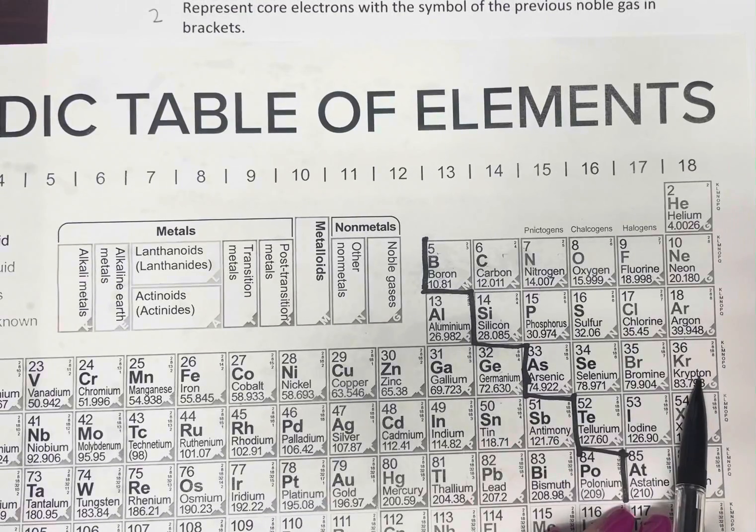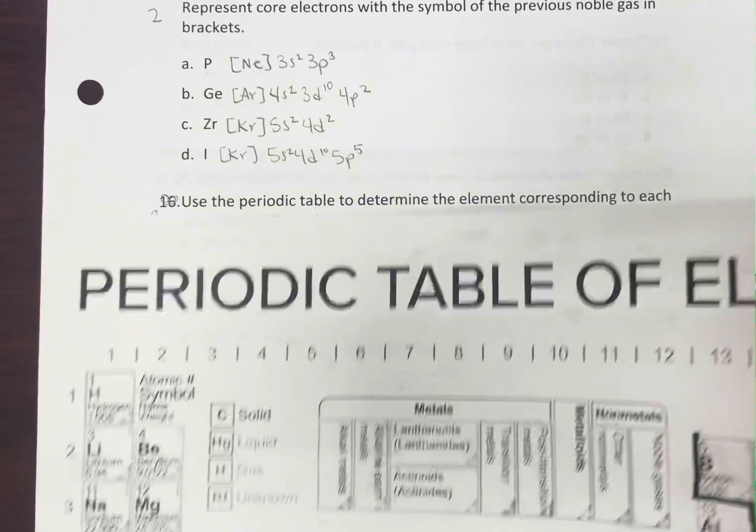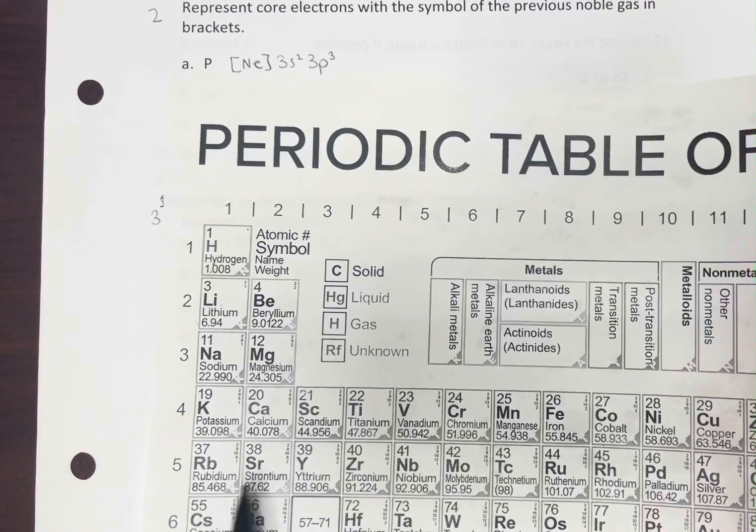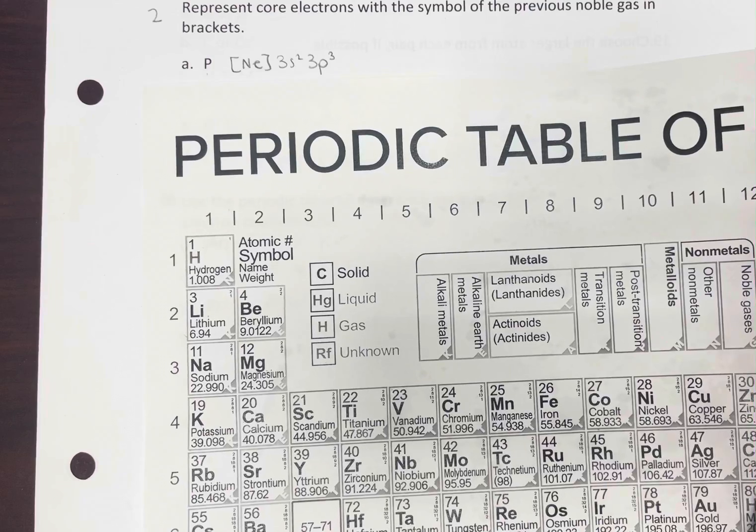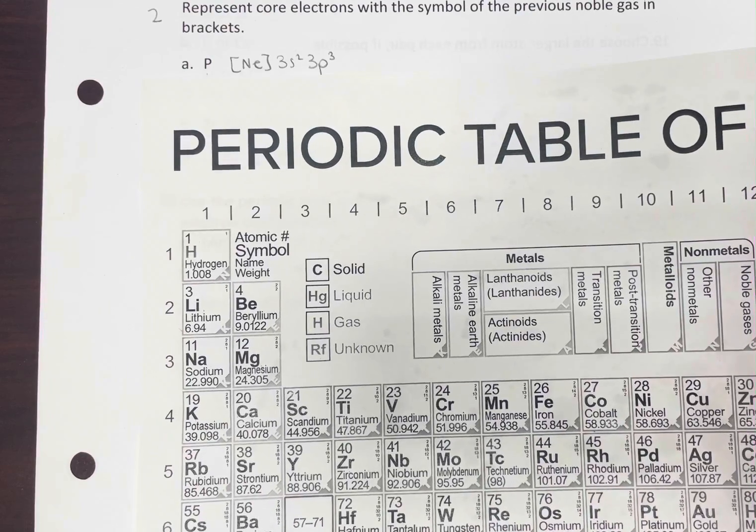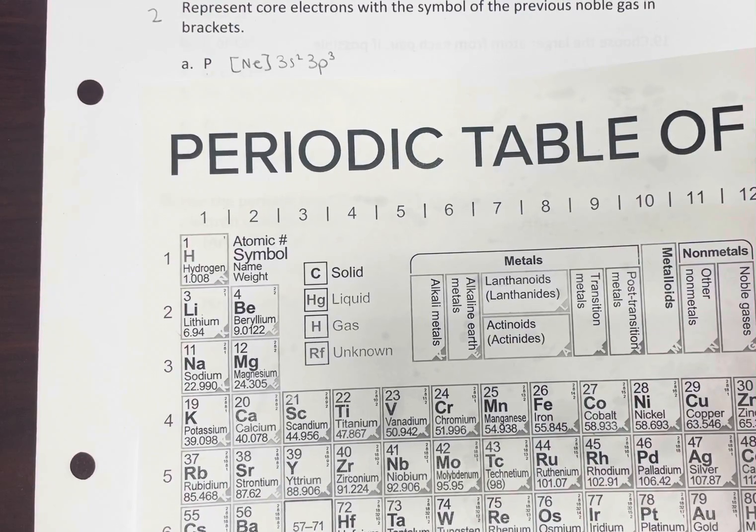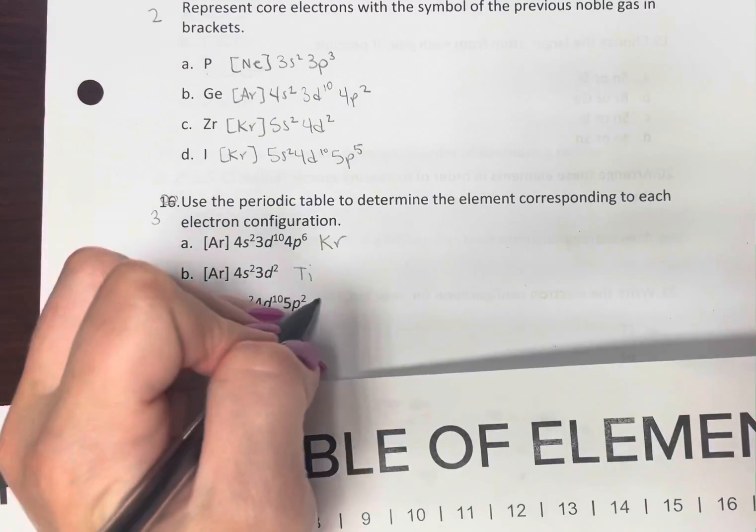Krypton. That's a full fourth row. And then we're going to have 5s2, 4d10, 5p2. That's going to be 10, or Sn.